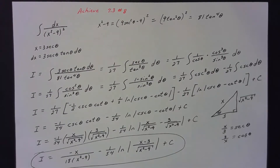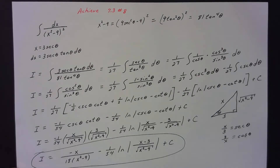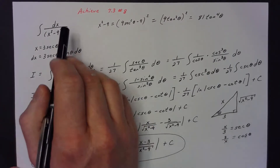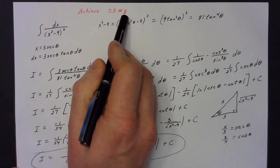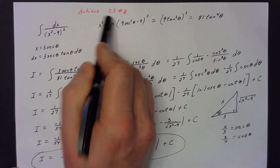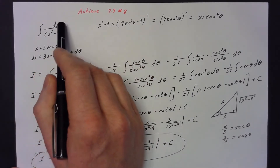In this video, I'll try to make sense out of some of the trigonometric substitution problems in section 7-3, namely number 8, 9, and 10 on the Achieve assignment. So this first one, whenever we look at it, this should mimic your number 8 in section 7-3.